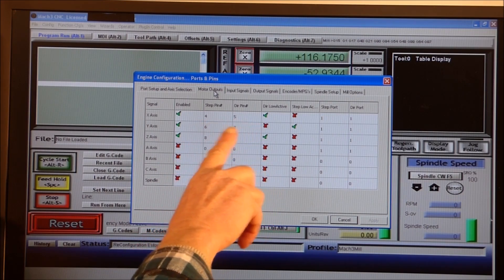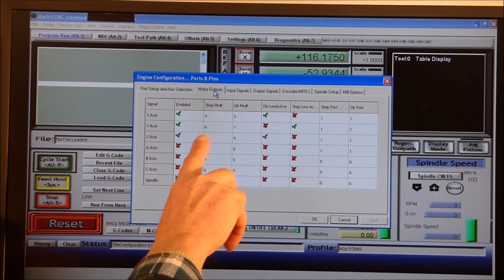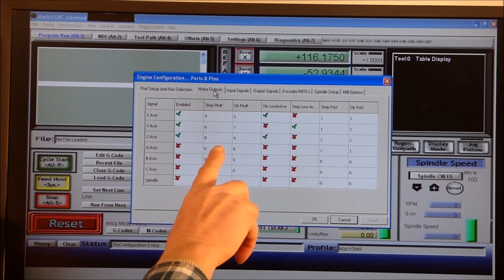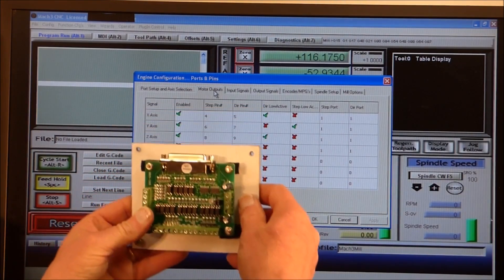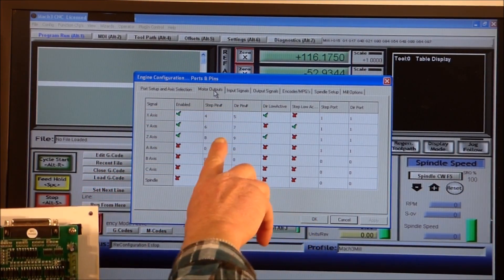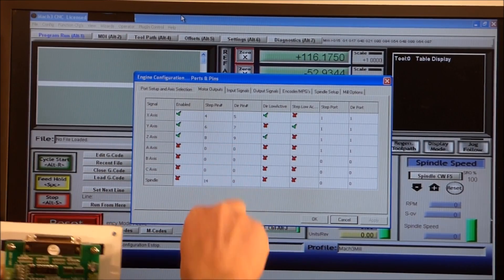Motor outputs - in my particular case the x-axis step and direction are pins 4 and 5, y-axis 6 and 7, and z-axis 8 and 9. These are the pin numbers actually on the plug that plugs into the back of your computer which relate to the connection on the board.